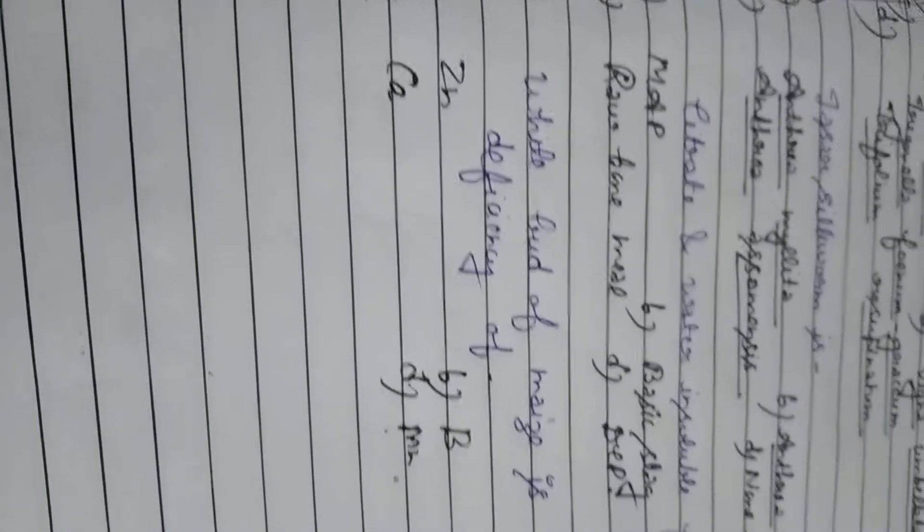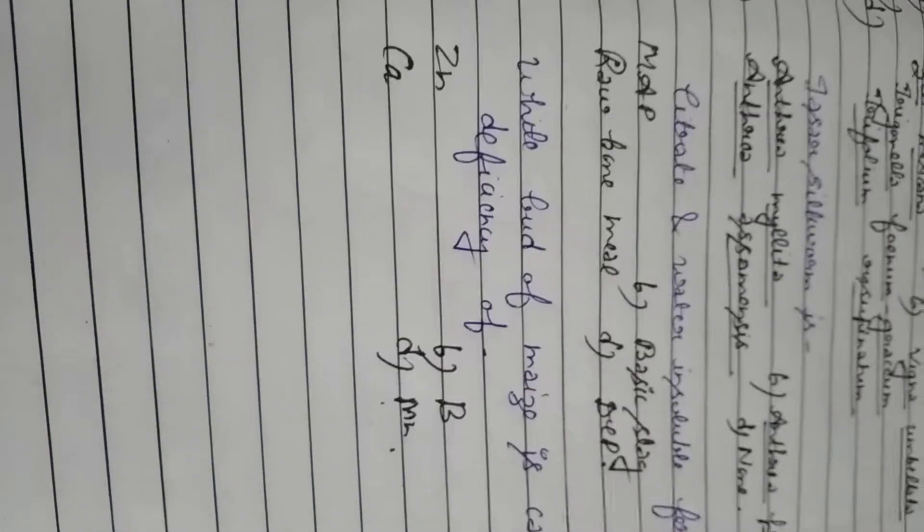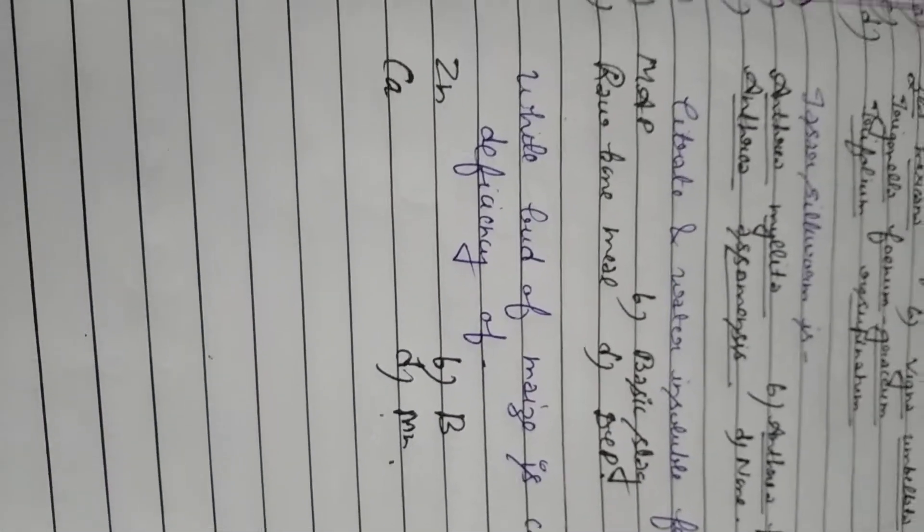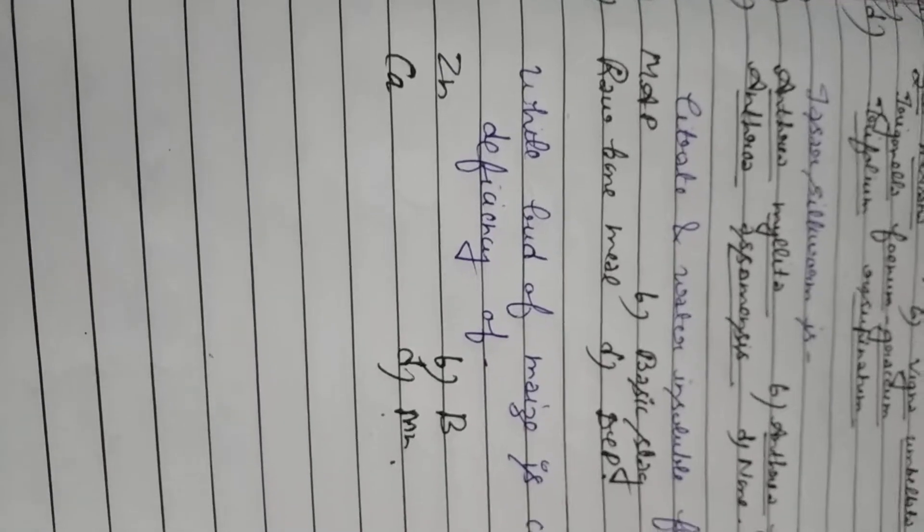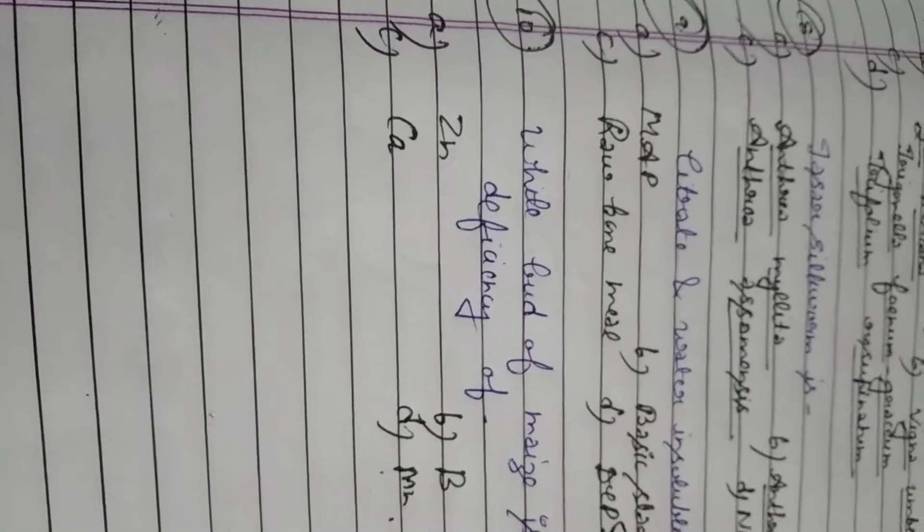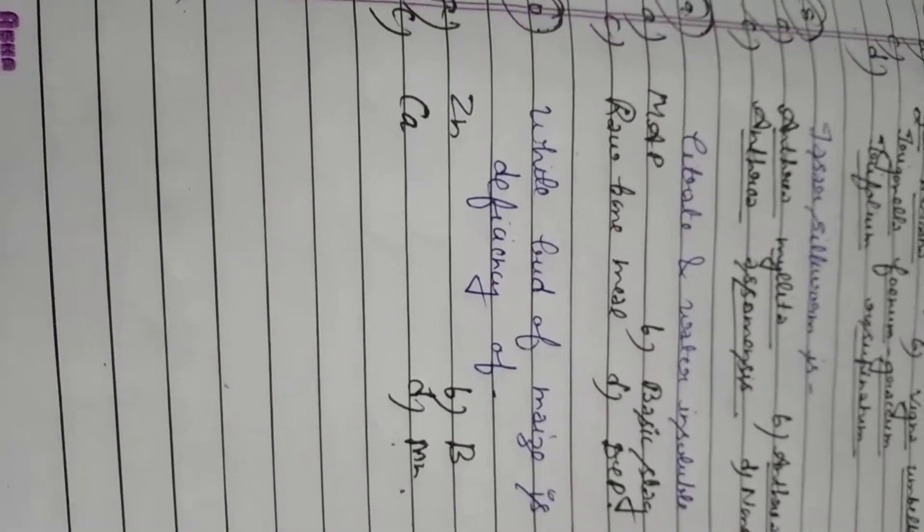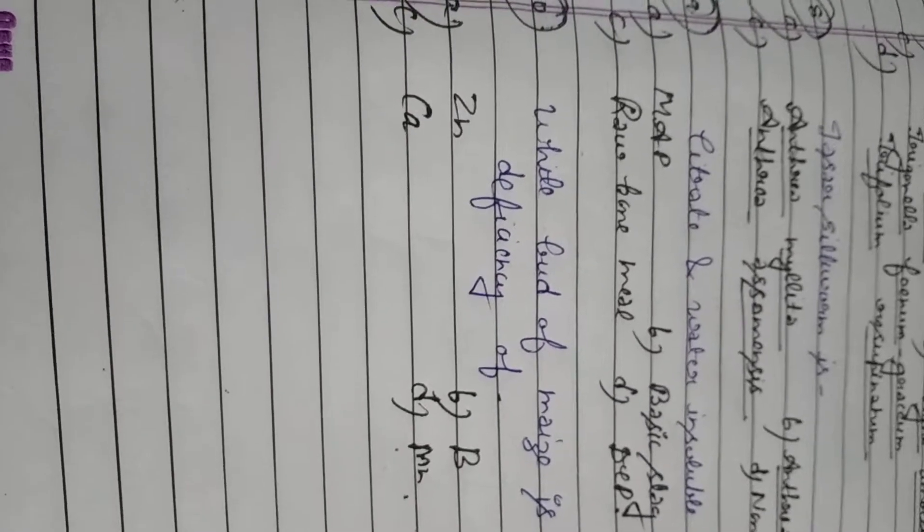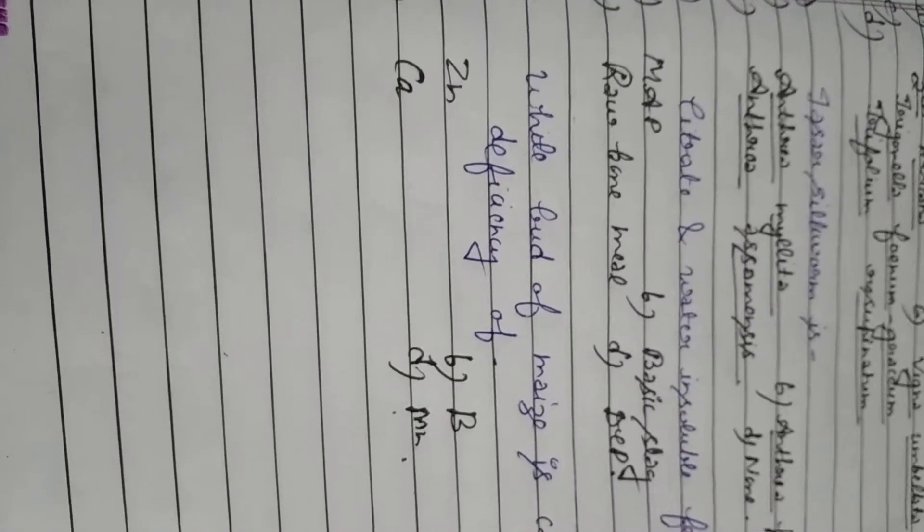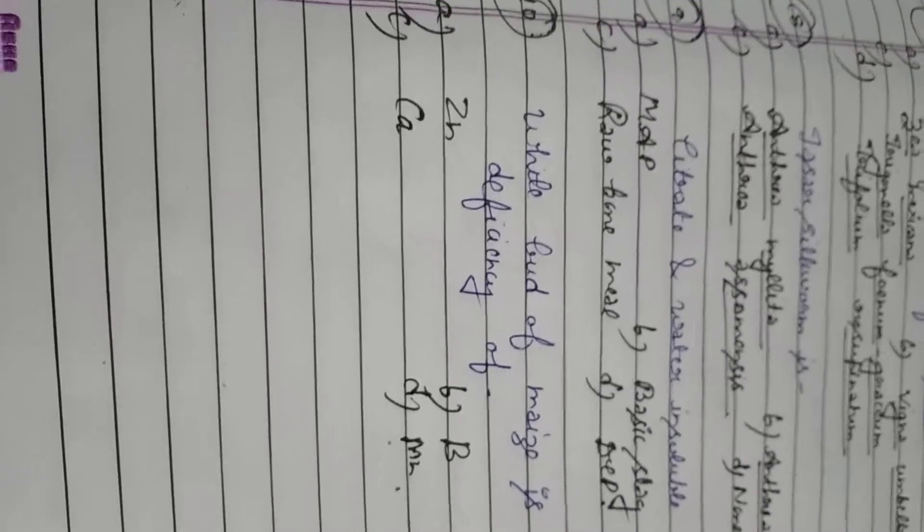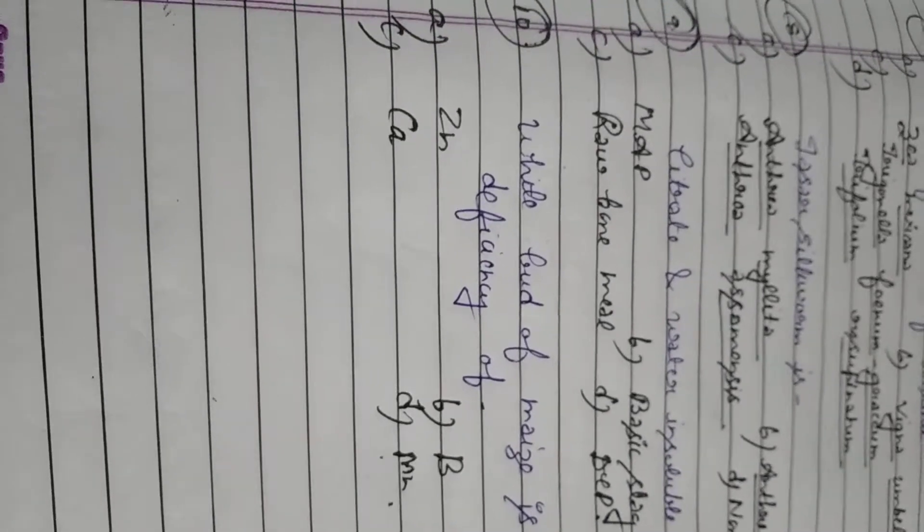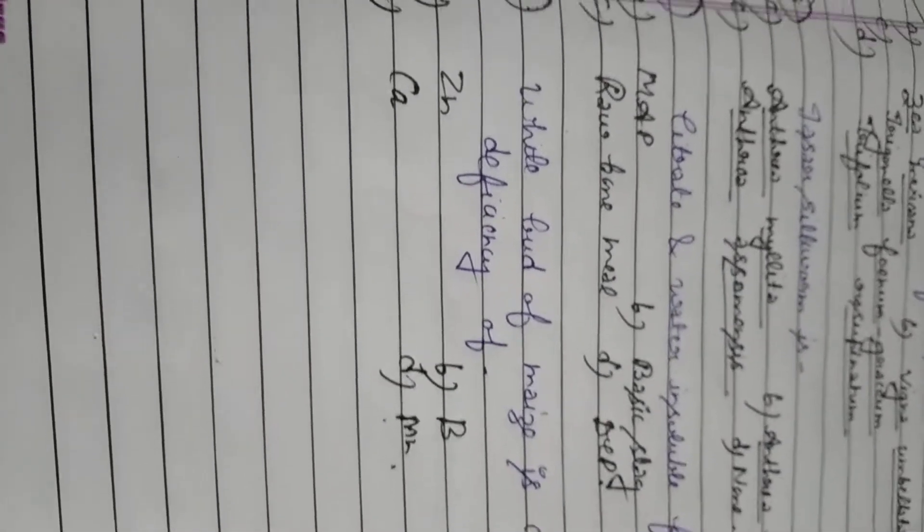Student last but not the least. White bud of maize is caused by deficiency of. You have to tell which of the following nutrients is responsible for causing white bud of maize. Option A zinc, Option B boron, Option C calcium, Option D manganese. Student this is very important question. In 2017 JRF exam it was asked. So you remember some of the important physiological disorders. Like white bud of maize is caused by zinc. Khaira disease is caused by zinc deficiency.